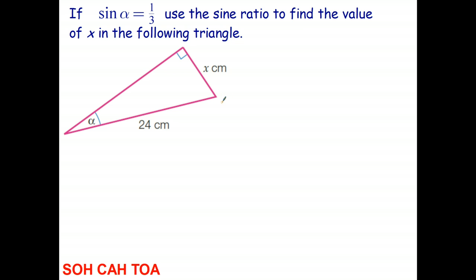We're going to start always by identifying the opposite, adjacent, and hypotenuse. So opposite the right angle is 24, so that must be the hypotenuse. Here's the angle of interest, so the side opposite that is X. And the side that's next to the angle, but not the hypotenuse, is the adjacent. So always start by identifying the opposite, adjacent, and hypotenuse.